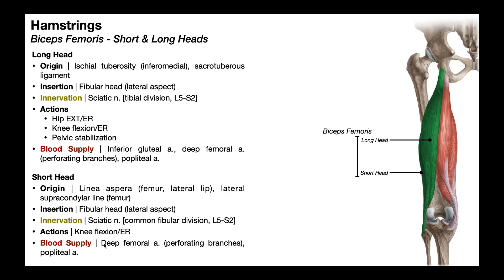The short head's blood supply is via perforating branches of the deep femoral artery and the popliteal artery. One major difference from the other hamstring muscles is that it has no actions at the hip, so it cannot promote pelvic stabilization. The other major difference is its innervation: while it is still innervated by the sciatic nerve, it is the common fibular division — not the tibial division like the other hamstrings. However, the nerve root contributions are still the same: L5 through S2.